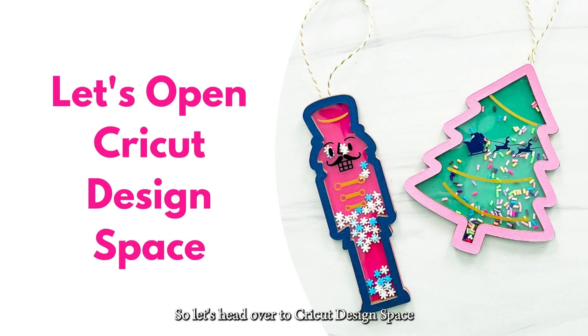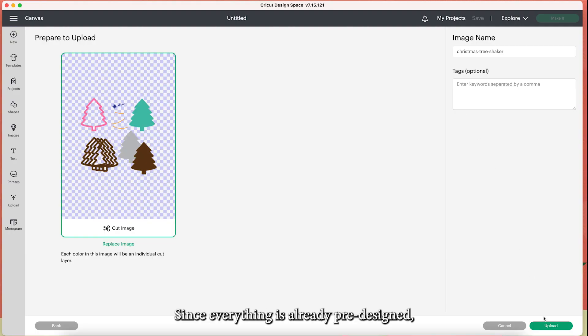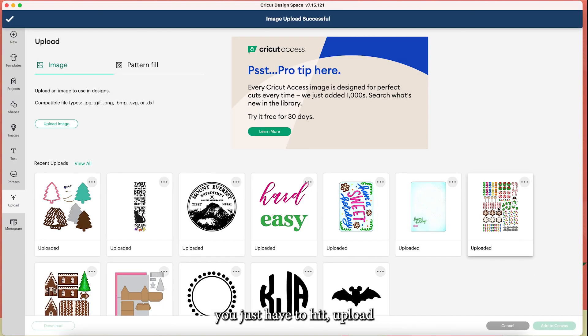So let's head over to Cricut Design Space and open our projects. The upload is on the left-hand side of the screen. Since everything is already pre-designed, you just have to hit upload and then select the image and then add to your canvas.